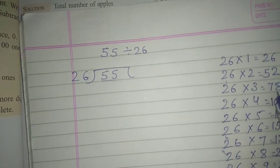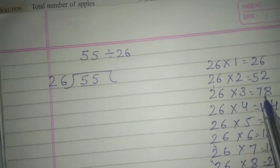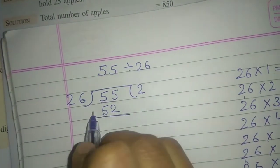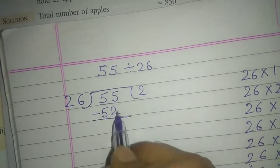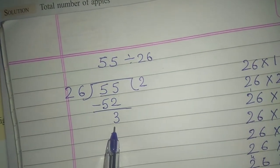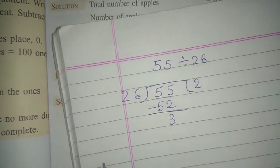26 times 2 is 52, and 26 times 3 is 78. 78 is too big, so we use 52. And then subtract to get 3. The remainder should be less than the divisor.